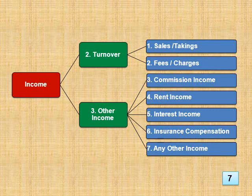In turnover we have two accounts: sales or takings, and fees or charges. Other Income is a group for incomes that exclude sales or fees. They include commission income, rent income, interest income, insurance compensation, plus any other income.